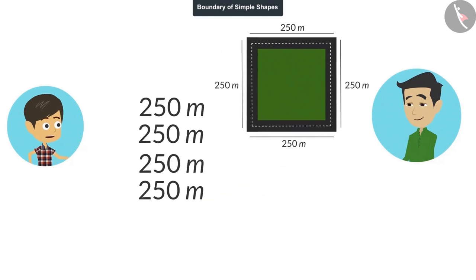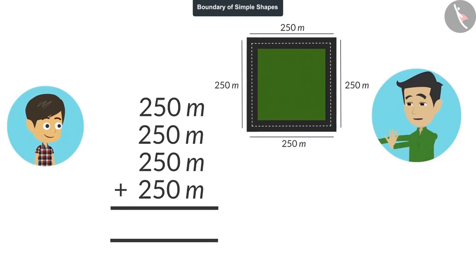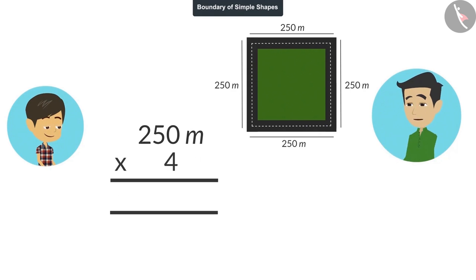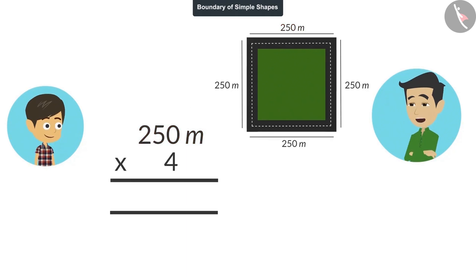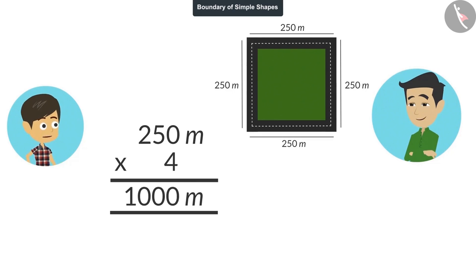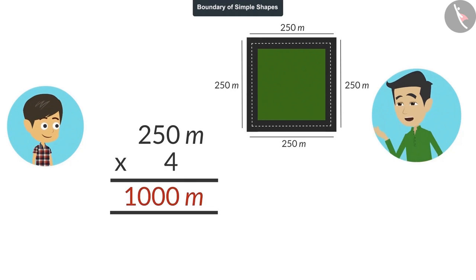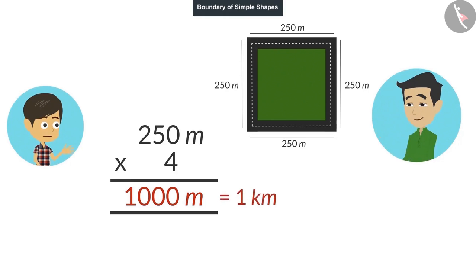I have to find the length of this boundary by multiplying the length of an edge by 4. So tell me, what is the length of the boundary? 250 multiplied by 4 will be 1,000. That means the length of this boundary is 1,000 meters. And how many kilometers is 1,000 meters? 1 kilometer.